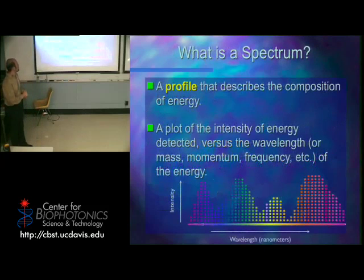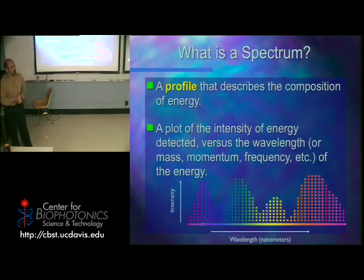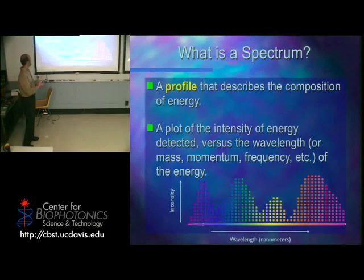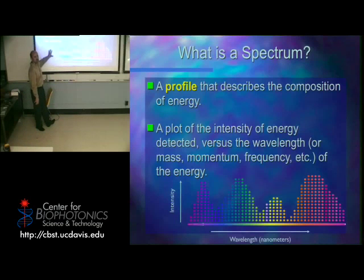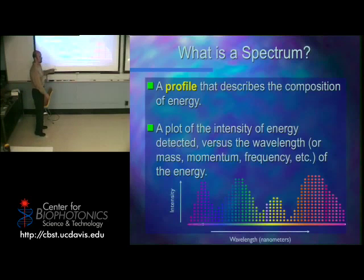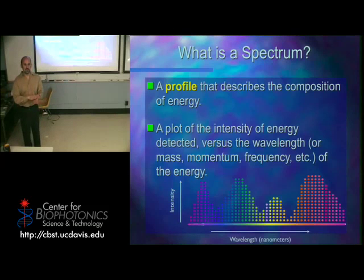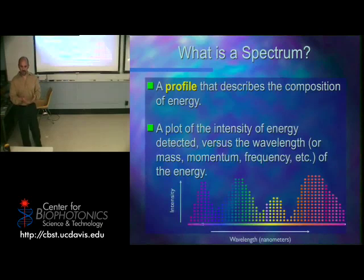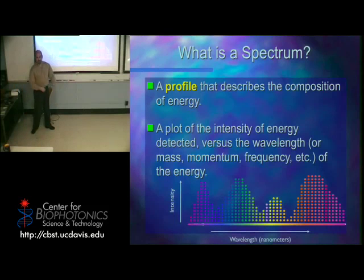A spectrum is what we tend to talk about a lot — you'll be taking spectra later this month in your next experiment. A spectrum is always a plot of energy detected versus wavelength, mass, momentum, or frequency of energy. It's always some kind of energy measure versus some kind of intensity measure. Primarily we use wavelength versus intensity. This can be emission, absorption, or reflection — they can all be measured as intensity, and they will make different-looking graphs depending on which you use.